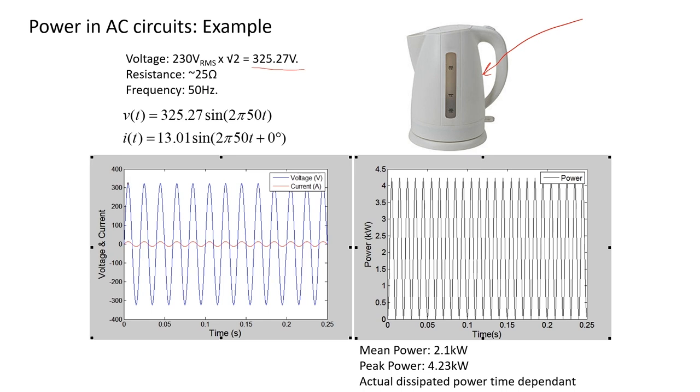So here our sine wave goes up to 325 peak, and its frequency is 50 hertz. So you can calculate that from this graph, and the resistance of this heating element in here is around 25 ohms.